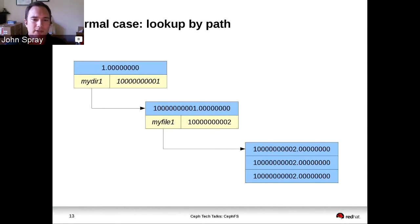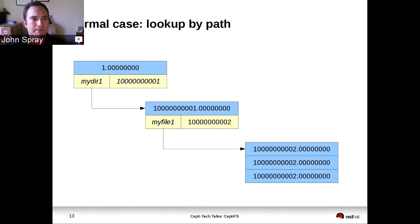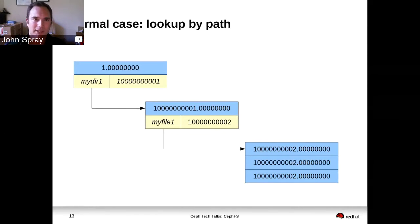This structure on disk is optimized for the lookup-by-path case, where somebody says they want to open /mydir1/myfile. So we can go and read the root directory fragment, find 'mydir', read the 'mydir' directory fragment, find 'myfile', and then go and see the objects on disk for that.